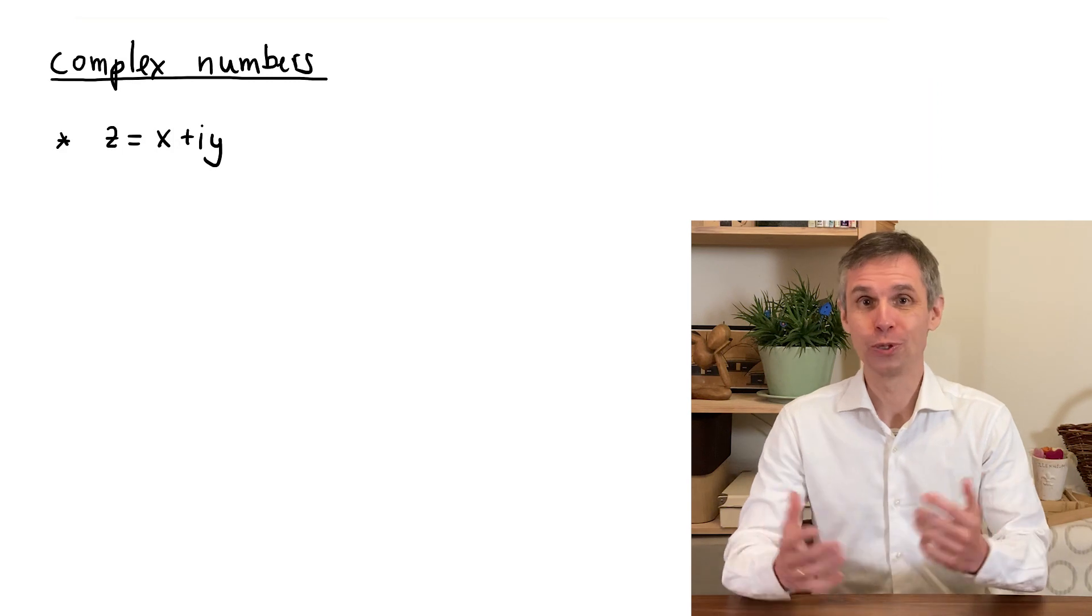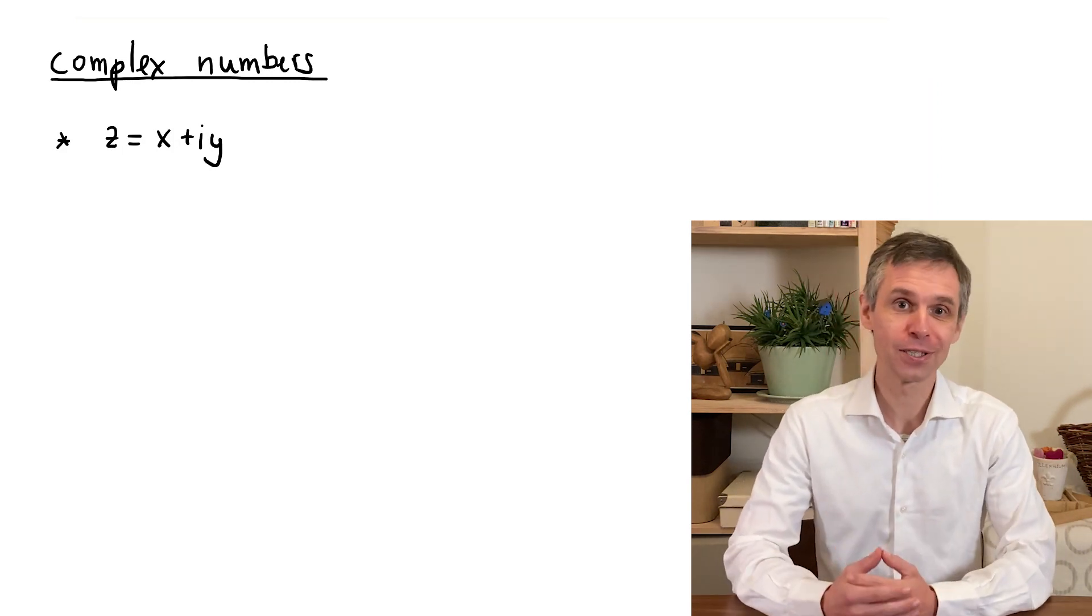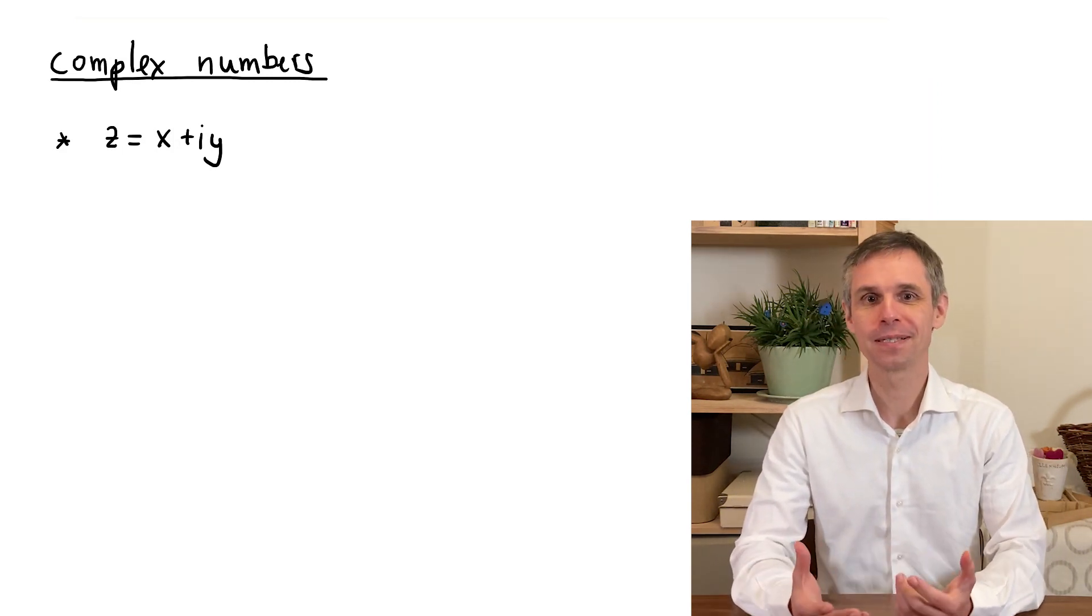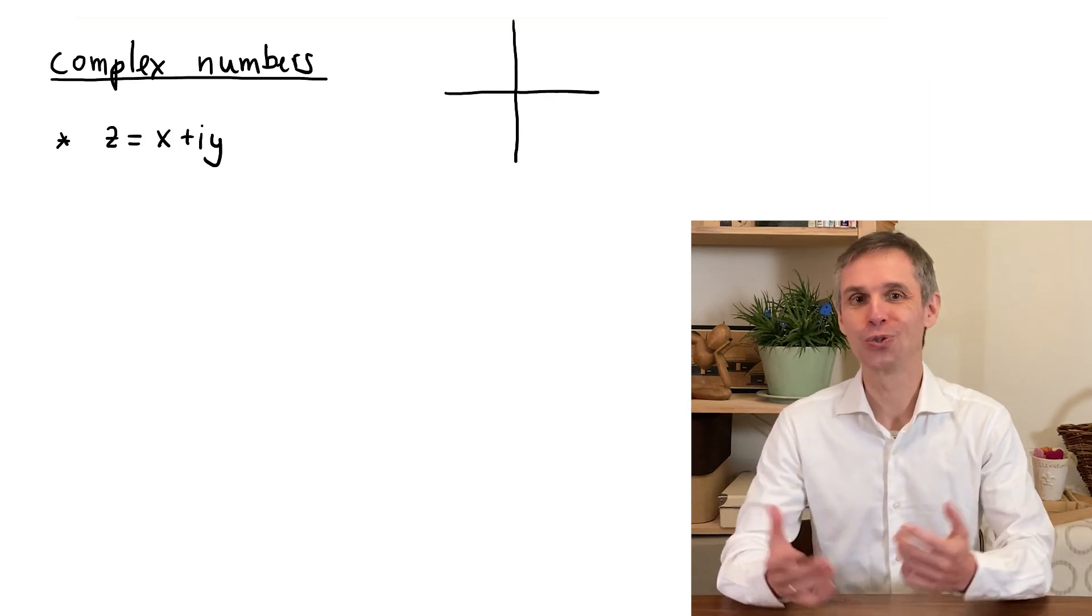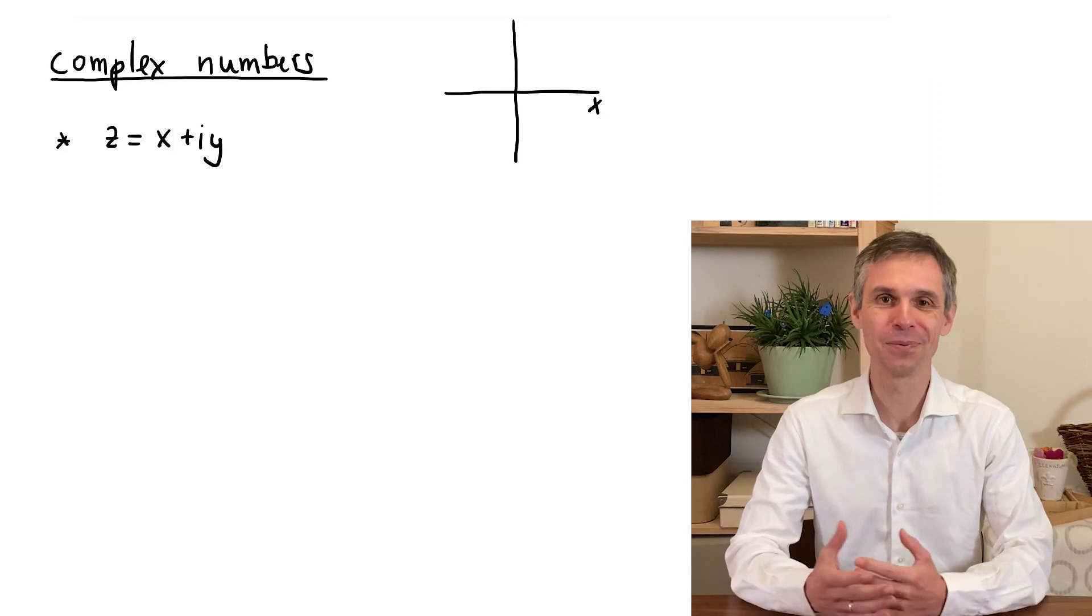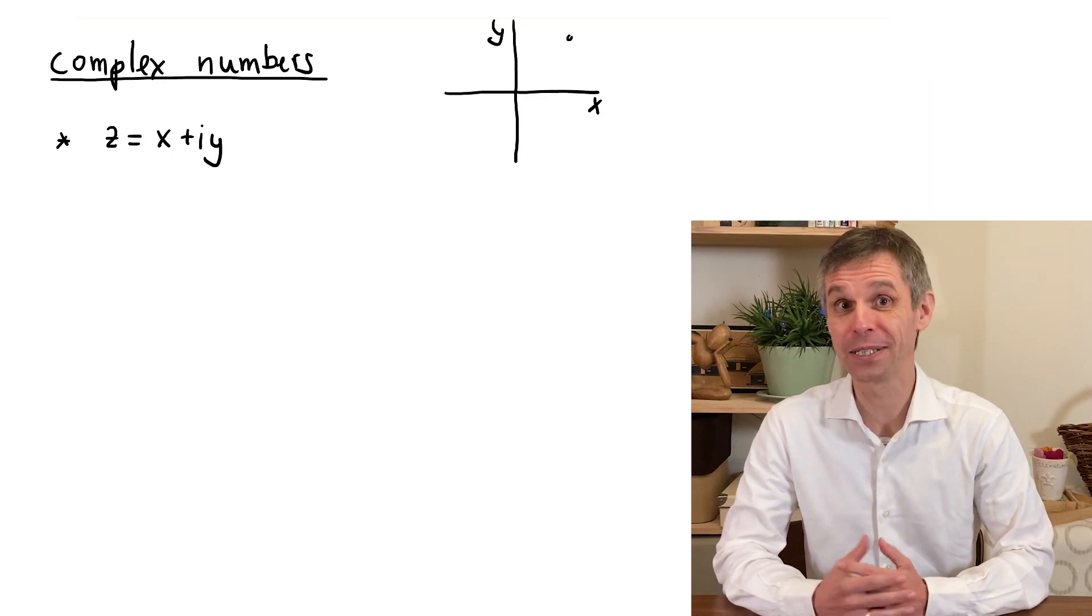x is known as the real part and y as the imaginary part, and together these numbers span the so-called complex plane, where x determines the position along the real axis and y determines the position along the imaginary axis.